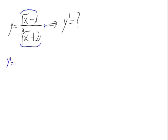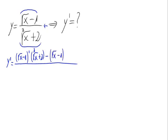Applying the formula for differentiating a fraction with functions, this would be the first function derivated, times the second function — the denominator — not derivated at all, minus the numerator times the denominator derivated. All over the denominator squared.